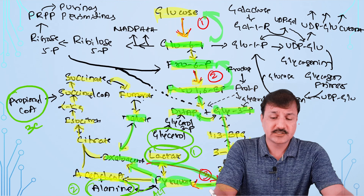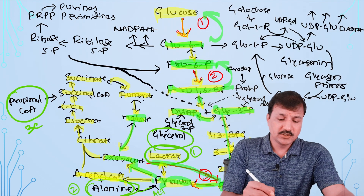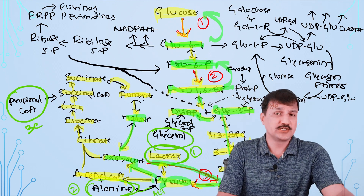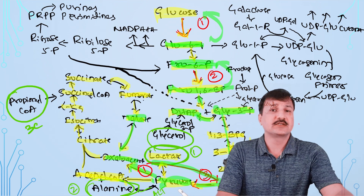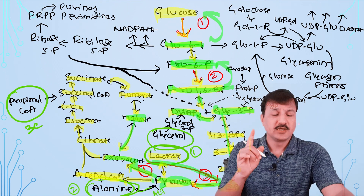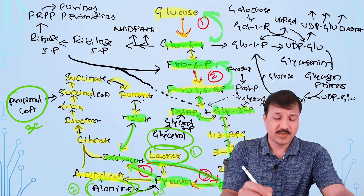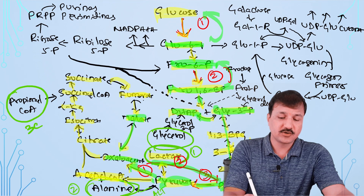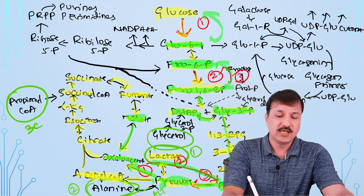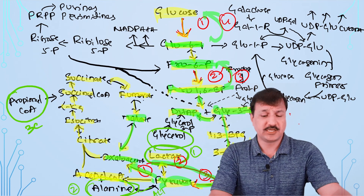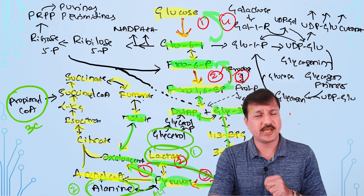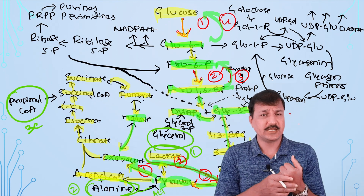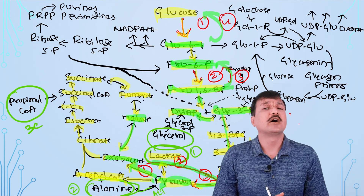The four special enzymes required for gluconeogenesis are: pyruvate carboxylase and phosphoenolpyruvate carboxykinase (both bypassing the pyruvate kinase step), fructose-1,6-bisphosphatase (bypassing PFK1), and glucose-6-phosphatase (bypassing the glucokinase/hexokinase step). All other reactions use the same reversible glycolytic enzymes.